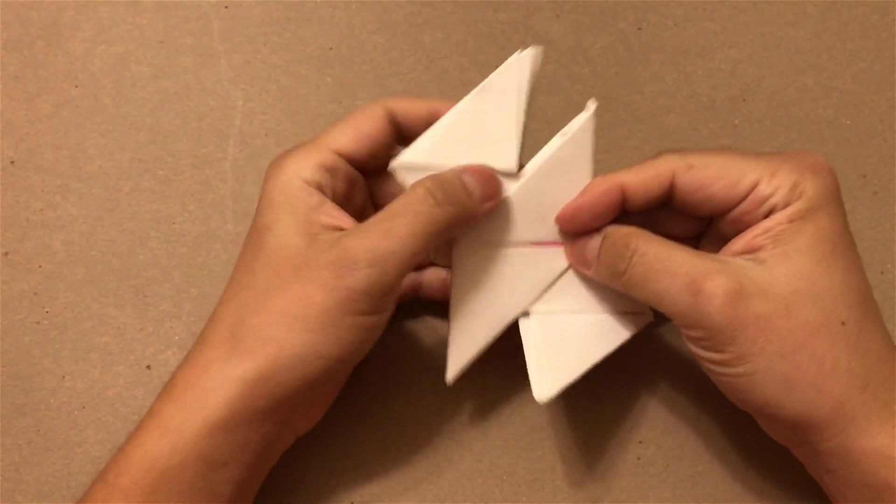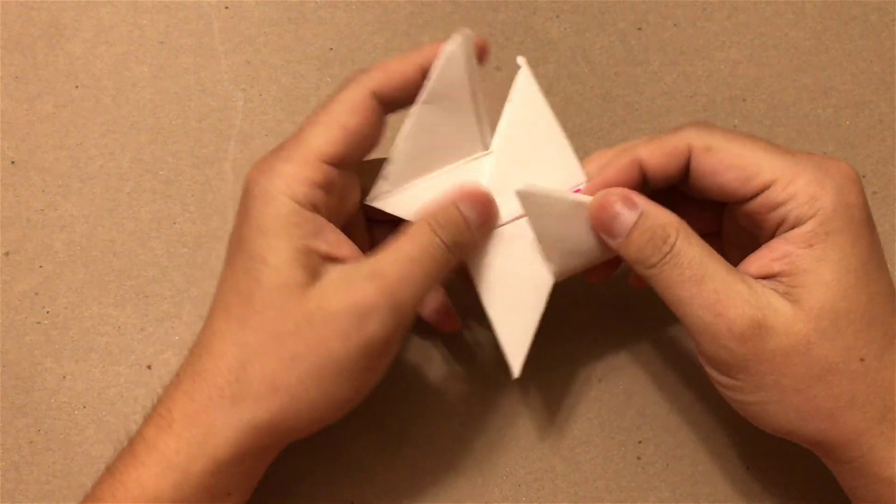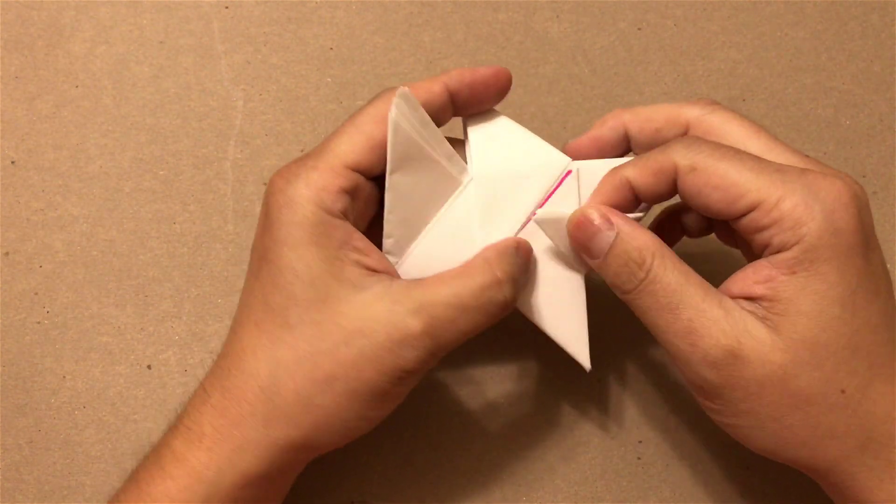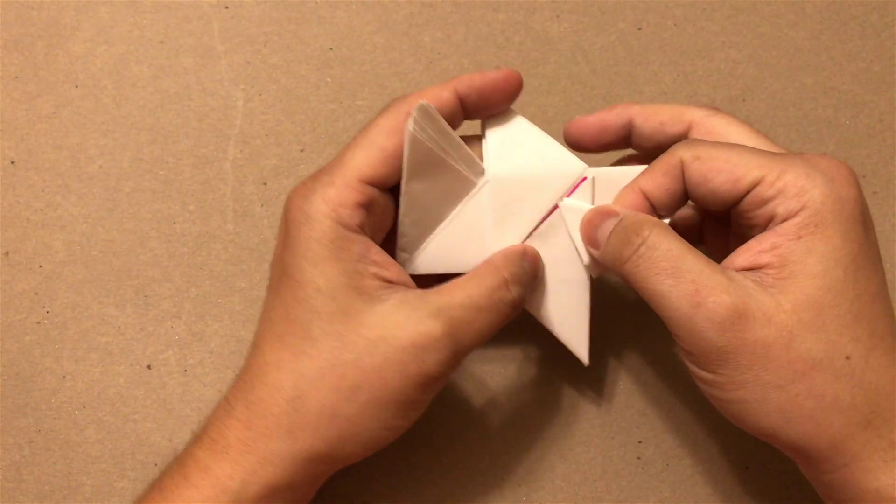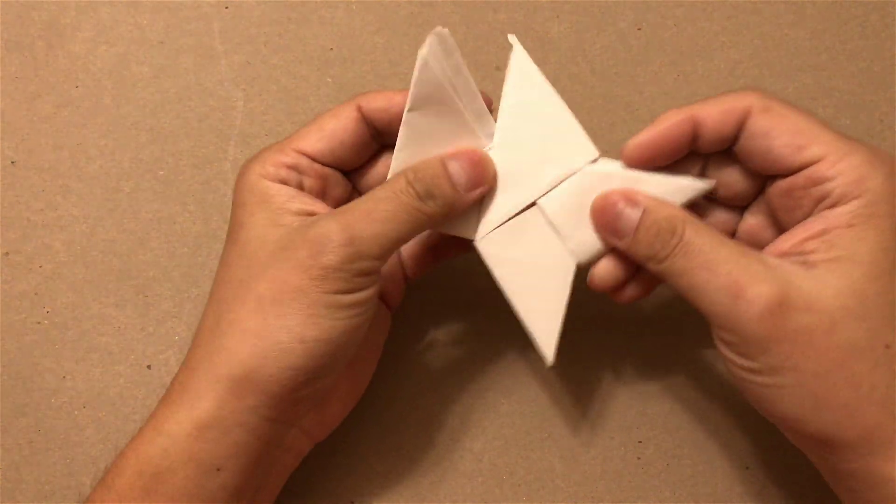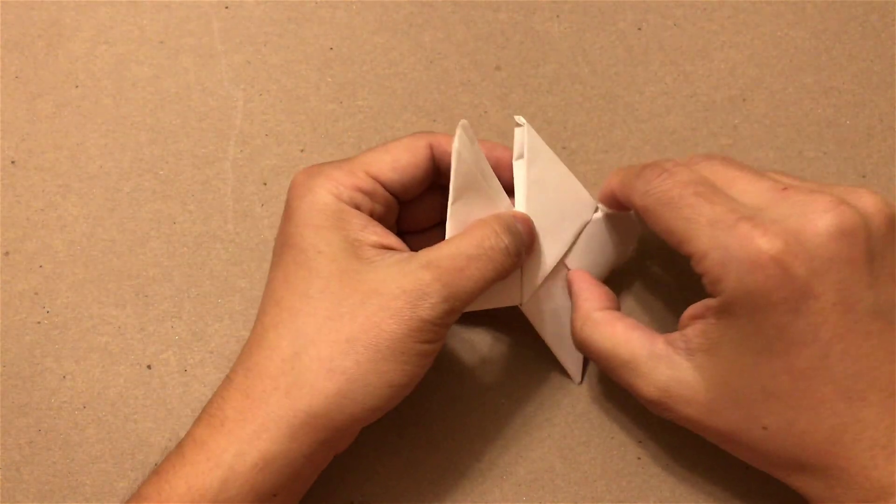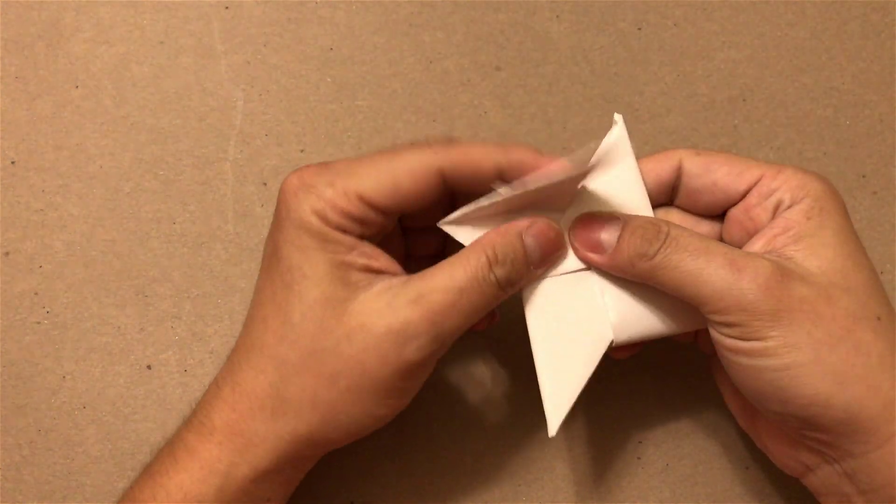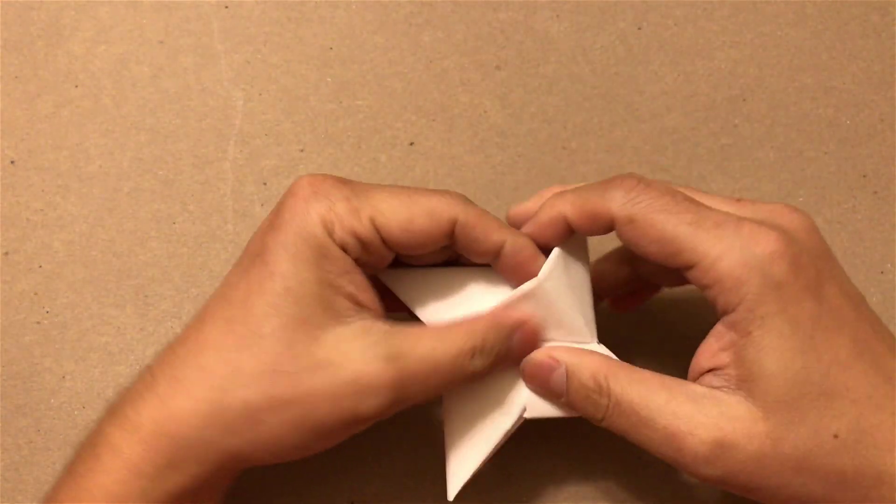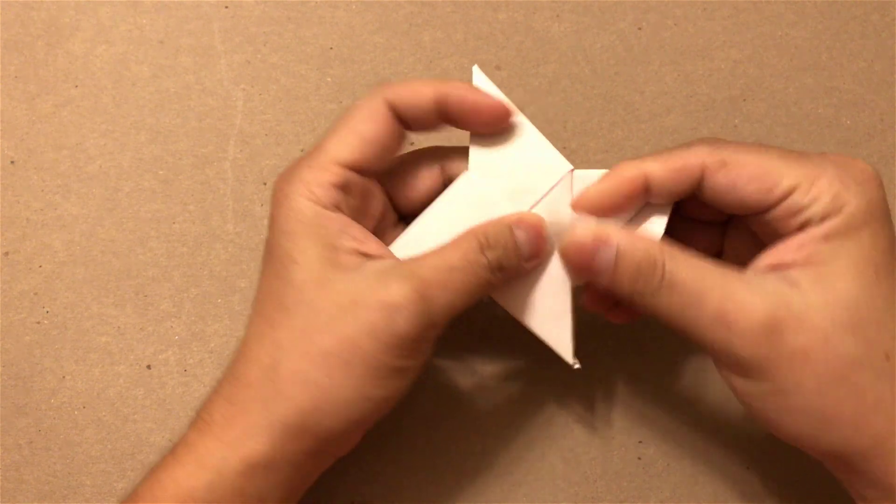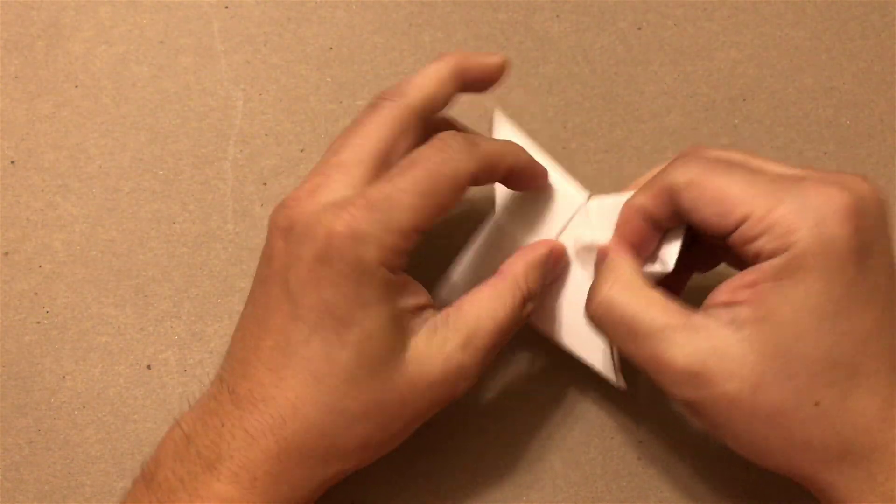So turn it around, you will do the same thing, but this time you will have to bend this triangle to tuck it in, and the same way when you flip it over, you will bend this triangle and then tuck it in here.